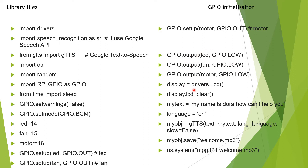Then we have the LCD driver — initially cleared — and then we give a text message: 'My name is Dora, how can I help you?' for our voice automation. The language used is English for Google Text-to-Speech, and that is saved in our file.